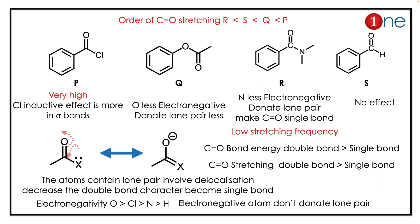Let us analyze. Generally, the carbonyl group has X with lone pairs. When you donate the electron, it becomes a single bond. The bond energy of a double bond is greater than a single bond, and the stretching frequency follows the same principle. So the bond should remain a double bond for high stretching frequency. Chlorine is more electronegative and doesn't donate, so the stretching frequency of acid chloride is very high.